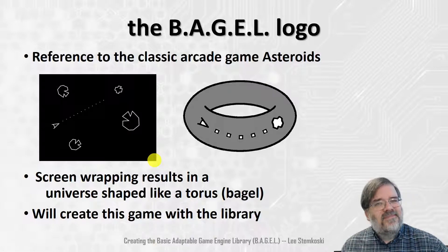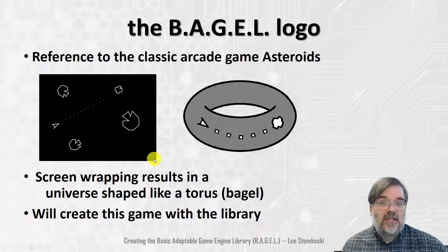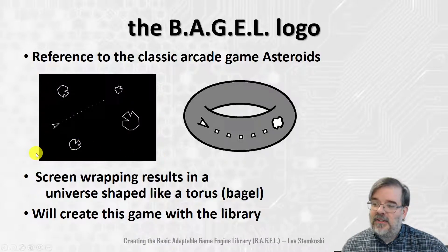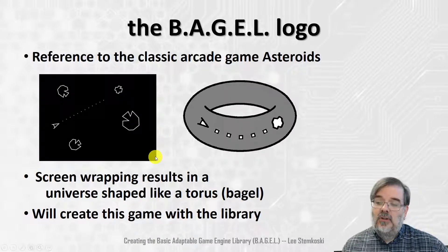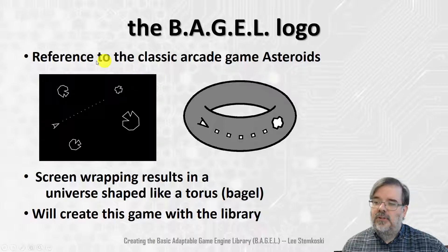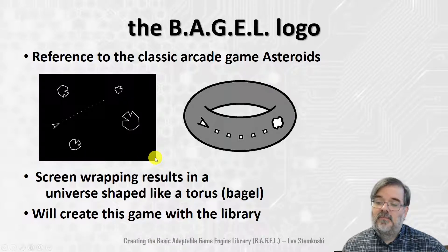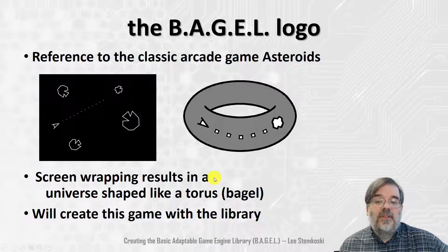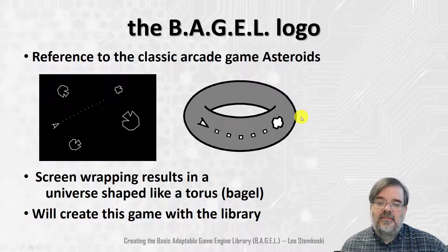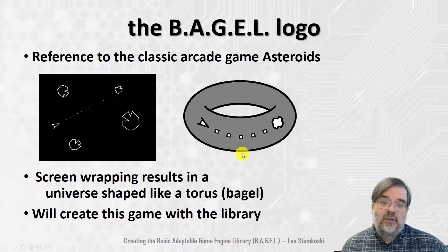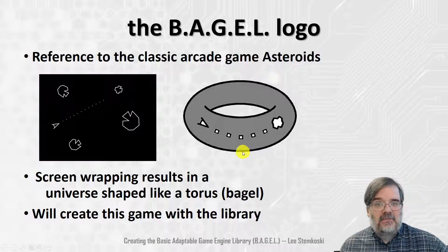So what is this universe actually shaped like? Imagine the Asteroids game playing screen is a sheet of rubber that you're able to pick up, bend, and warp. Imagine taking the left edge and bending it around so it attaches to the right edge and gluing those edges together — you'd end up with a tube. Then imagine taking the top circular part of that tube and bending it around so it joins the bottom edge. The result of these attachments would show that the universe is actually shaped like a torus — the mathematical term for this shape — but I like to think of it as a bagel or a donut.